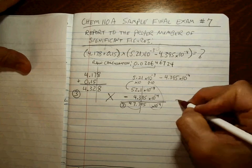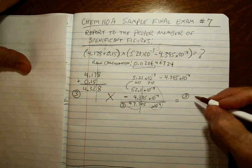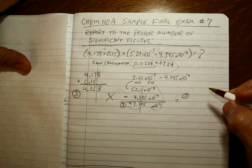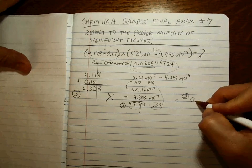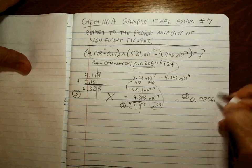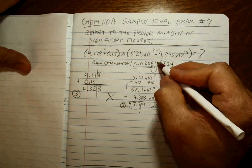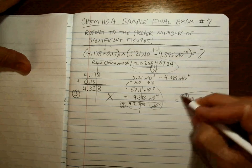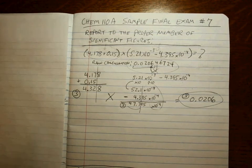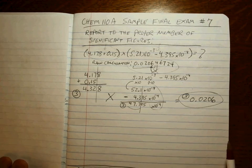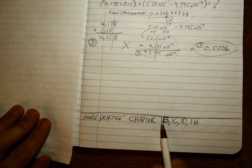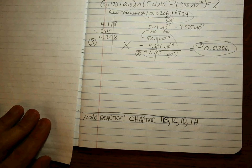The answer has to have 3 sig figs. Taking that raw value and writing it to 3 sig figs gives 0.0206. Does that last digit round up? No, it does not — there's your answer. If you want to get better at this, you need to, because this is going to be on this problem and on your final exam in Chem 110B. Chapter 1, parts B, C, D, and H as well. Good luck.